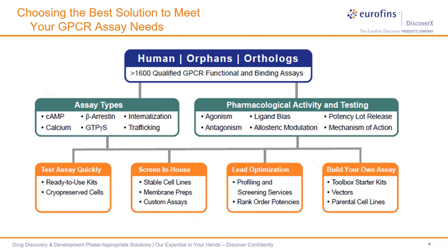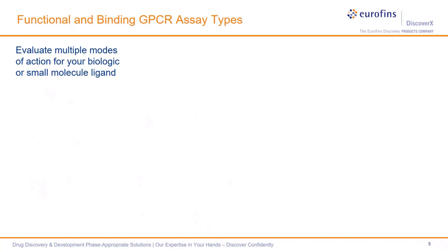Then determine your assay format. Do you want quick results, like using an assay-ready kit? Or do you want a custom assay for your unique GPCR ortholog? Or do you need full control in-house using a toolbox product to create your own GPCR assays? Either way, we have over 1,600 assays for you to choose from to get you started.